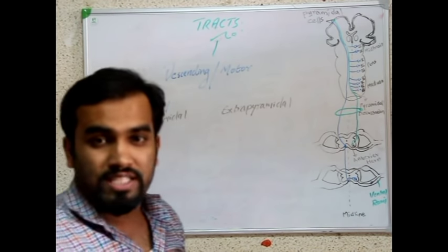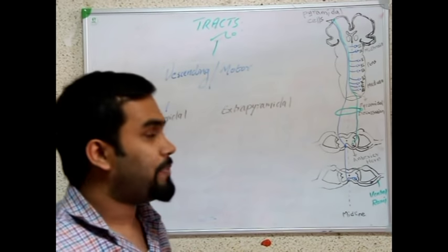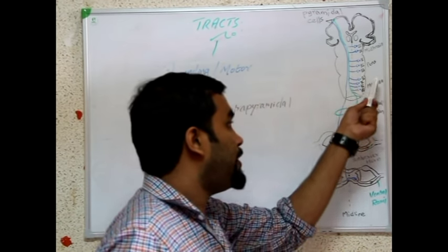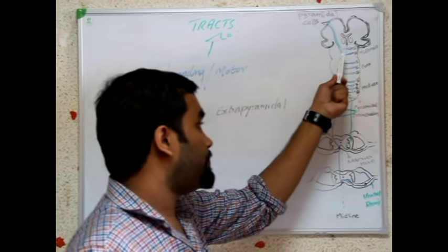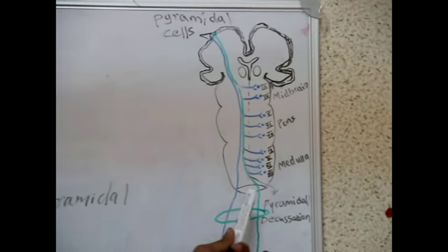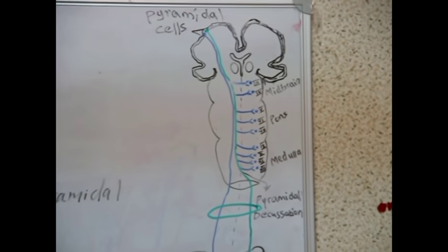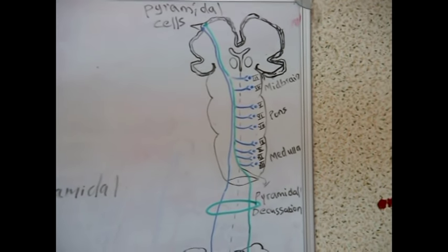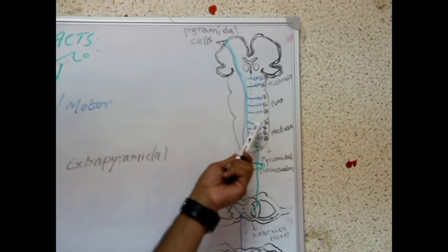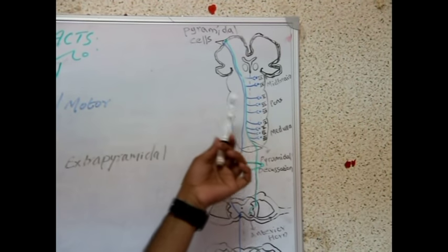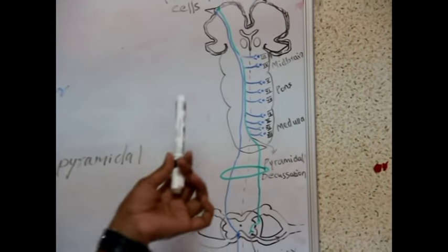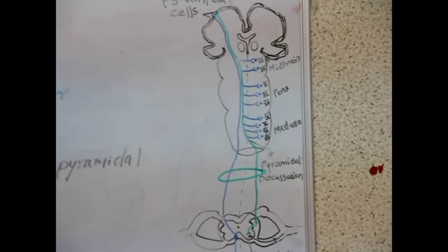First of all, we need to know the difference between pyramidal and extrapyramidal. The tracts which pass through the pyramidal system — the pyramid structure in the medulla oblongata — are known as pyramidal tracts. The extrapyramidal tracts are all other tracts which do not pass through the pyramid of the medulla oblongata. They mainly pass through the basal ganglia.